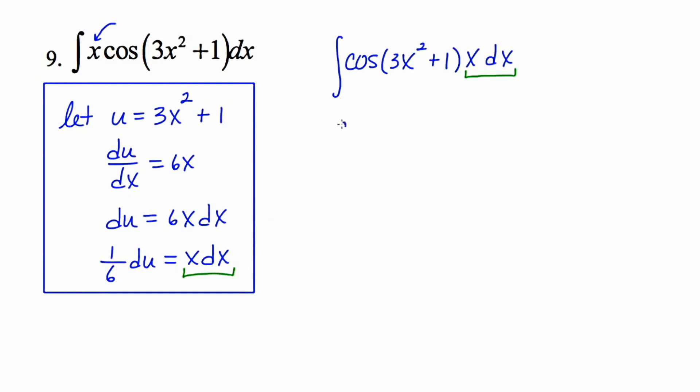Now the x dx at the end is just like this x dx at the bottom of the box. So I'm going to rewrite this as the antiderivative of the cosine of u. And then this x dx is really 1/6, which I'll write in front, du. Now the antiderivative of cosine is sine. So we have 1/6 sine u plus c. And I'll finish by back substituting in for u.